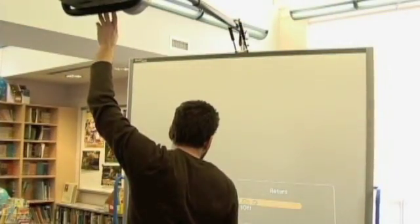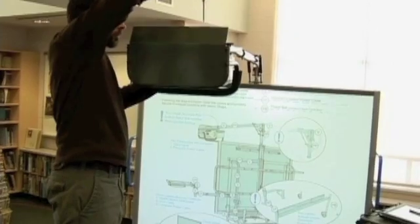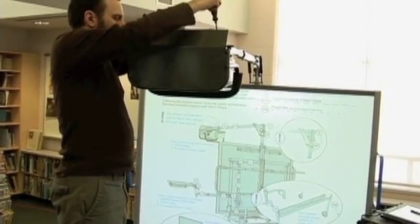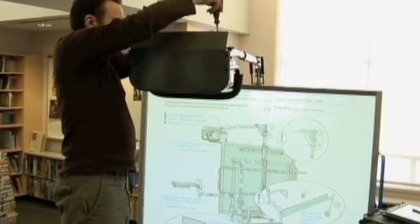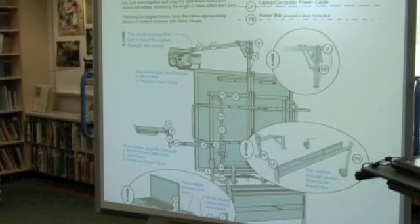Use the zoom and keystone functions to fill the board with a square image. Once you're satisfied with the image, tighten the bolts you loosened for the projector swivel adjust and tighten the bolts at the back of the unit on top of the slide pole adjust. You may need to do some fine tuning at the projector once everything is tightened.